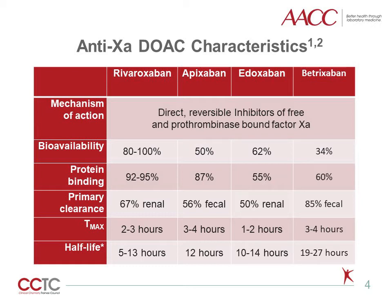There are currently four FDA-approved anti-factor-Xa DOACs: rivaroxaban, apixaban, edoxaban, and betrixaban. These are commonly called anti-Xa drugs. While all of these DOACs are direct reversible inhibitors of free and bound activated factor X, there is variability in other characteristics. Most importantly for laboratory considerations are the time to achieve peak levels and drug half-life.